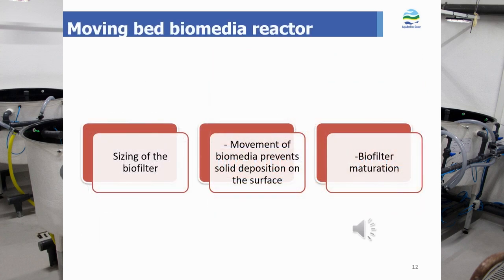One of the most common biofilter types in recirculation aquaculture is the moving bed biofilm reactor (MBBR). This is a large tank with bio-media inside, which is agitated by an air pump via an air grid creating bubbles. It is very important to size the biofilter properly; sizing depends on the total ammonia-nitrogen production per day, which in turn depends on how much fish is grown in the culture tanks.